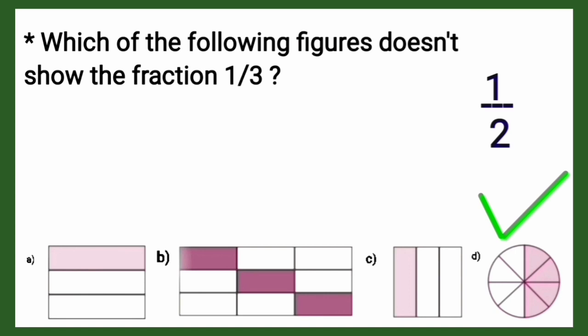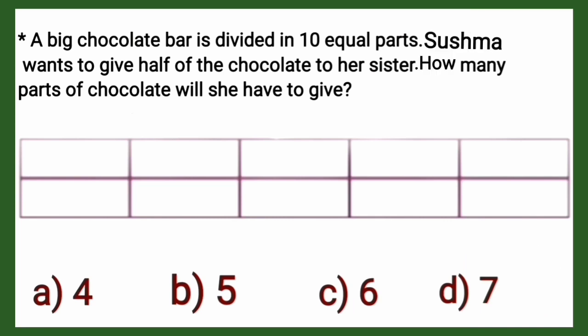Next question: a big chocolate bar is divided into 10 equal parts. Sushma wants to give half of the chocolate to her sister. How many parts of chocolate will she have to give? We can see clearly that the chocolate is divided into 10 total parts.